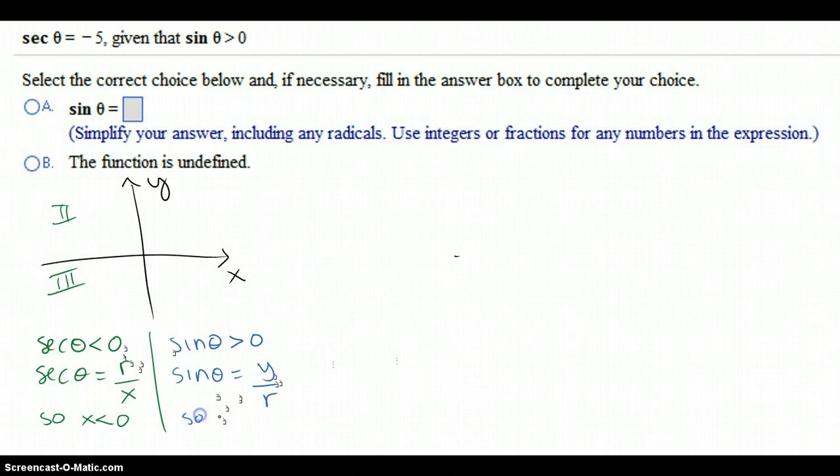So y is positive either in the first quadrant or the second. So the answer is going to be in the second quadrant. The secant is less than 0 in 2 and 3. The sine is greater than 0 in 1 and 2, so 2 satisfies both of these conditions.